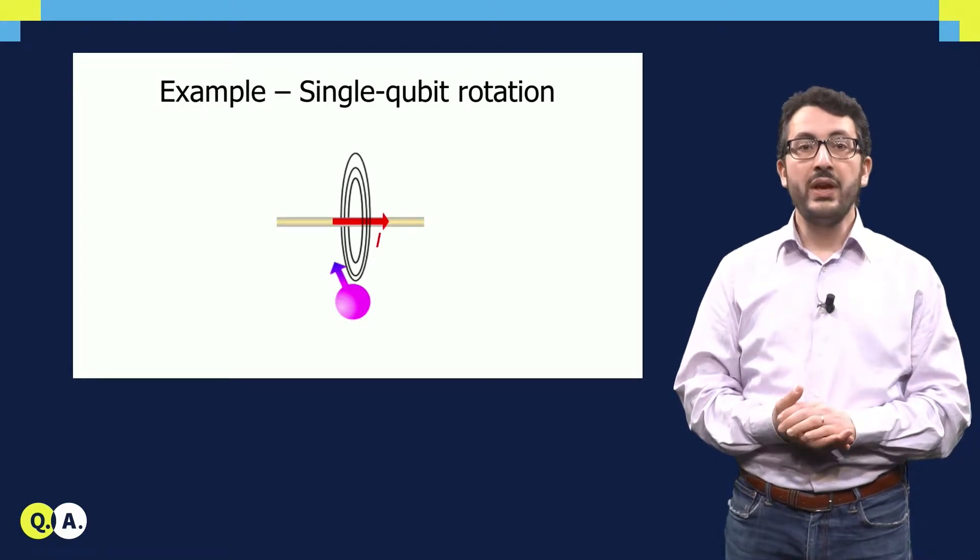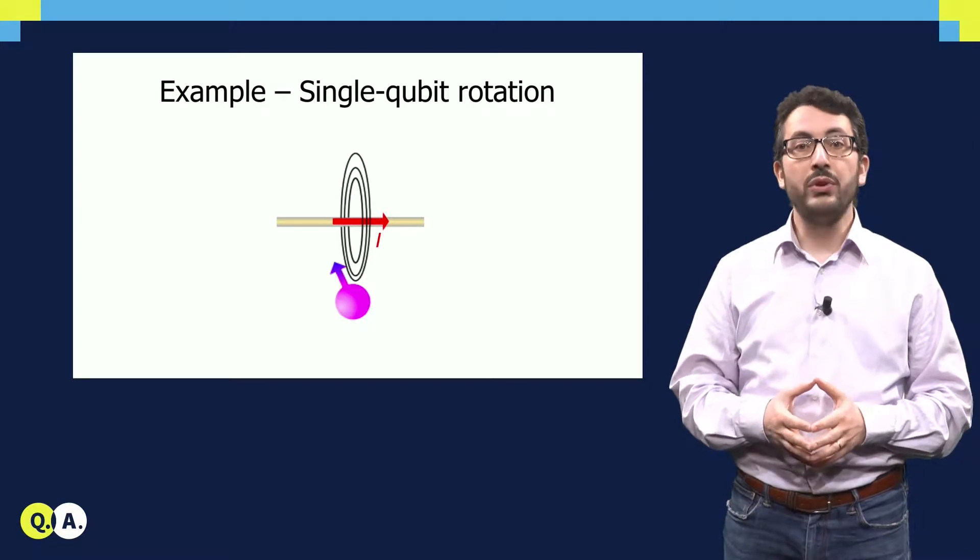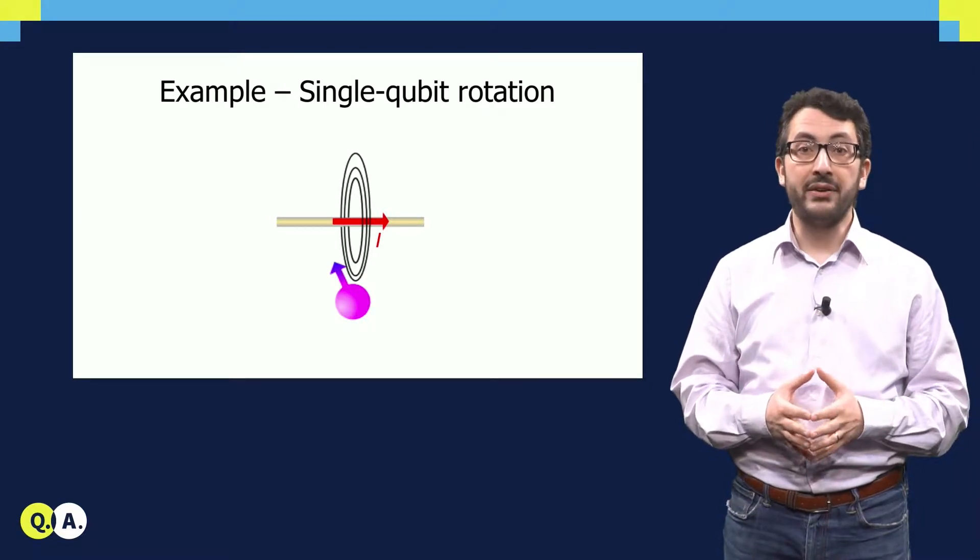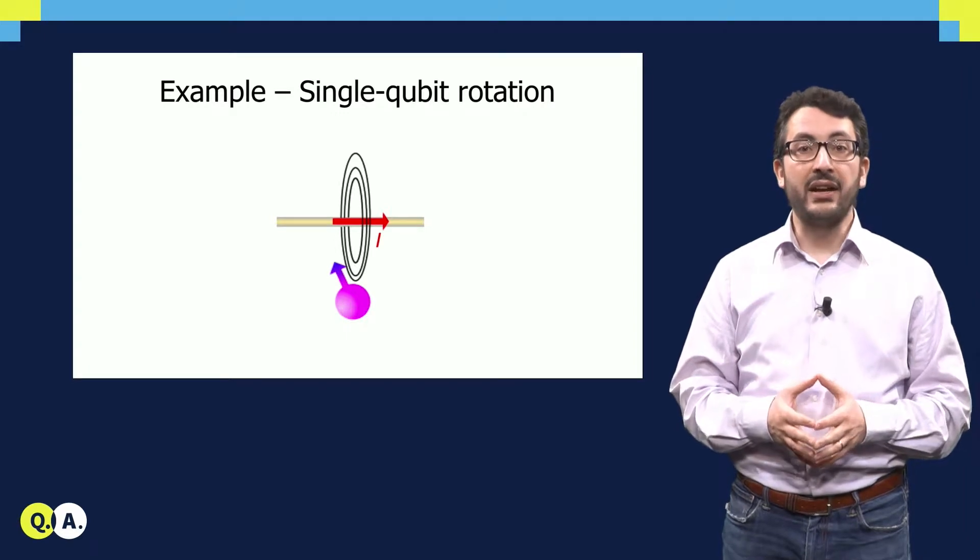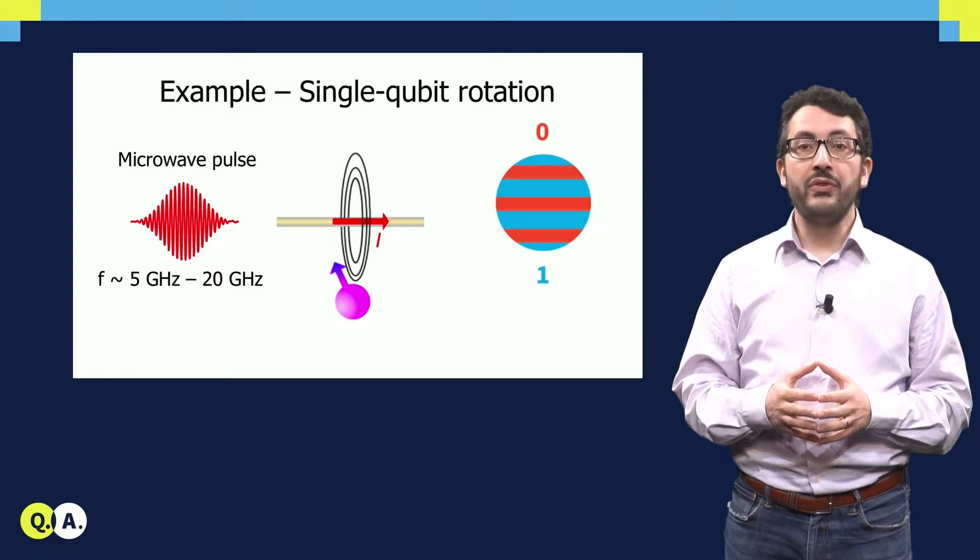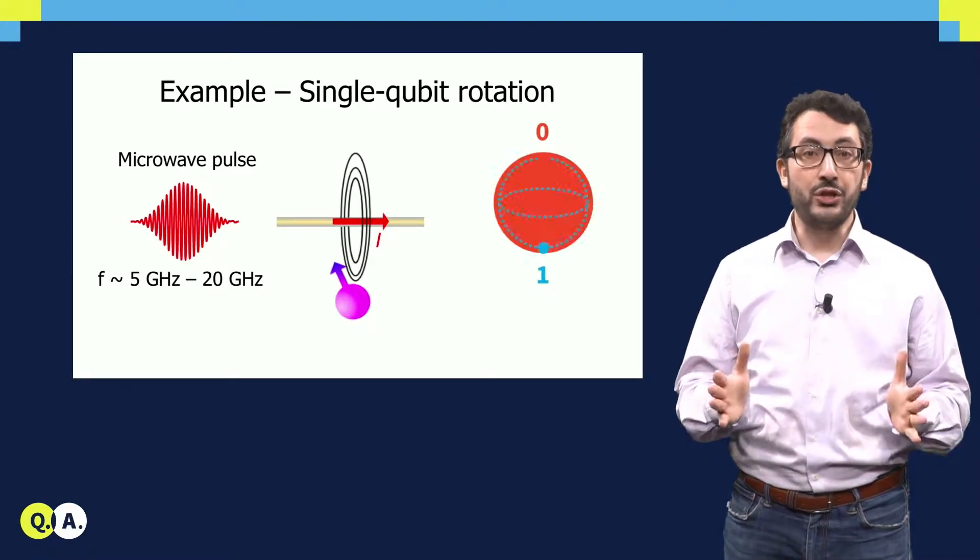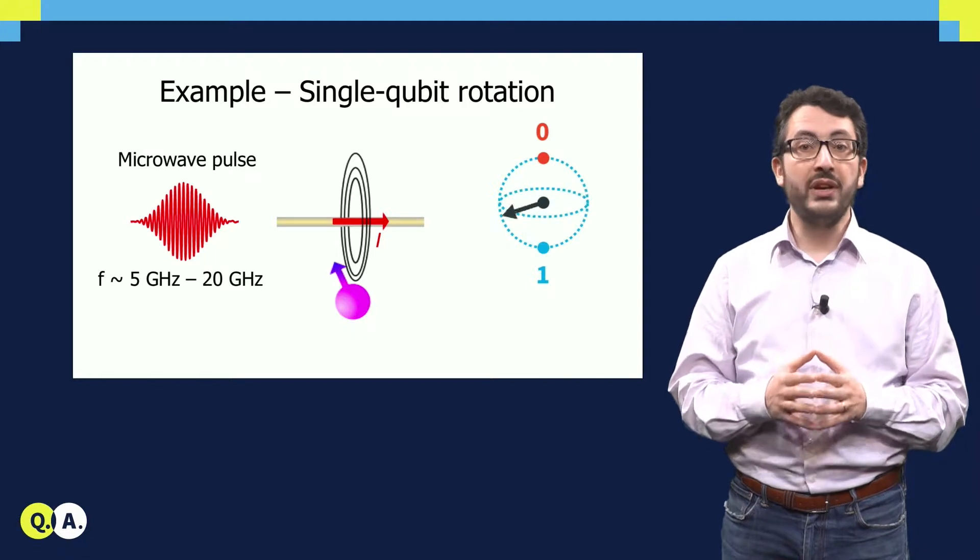To do that, we can think of putting a wire next to the qubit and let the current flow through the wire, so that the magnetic field is generated that can interact with the electron. To do that, we need to generate a certain microwave pulse with a certain amplitude and duration, at a frequency tuned to the resonance of the electron.